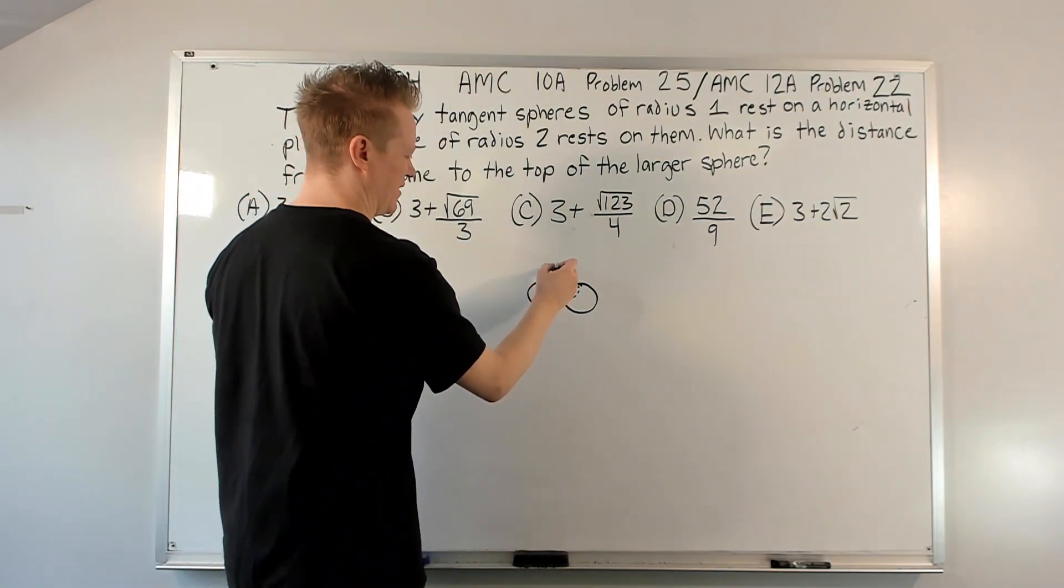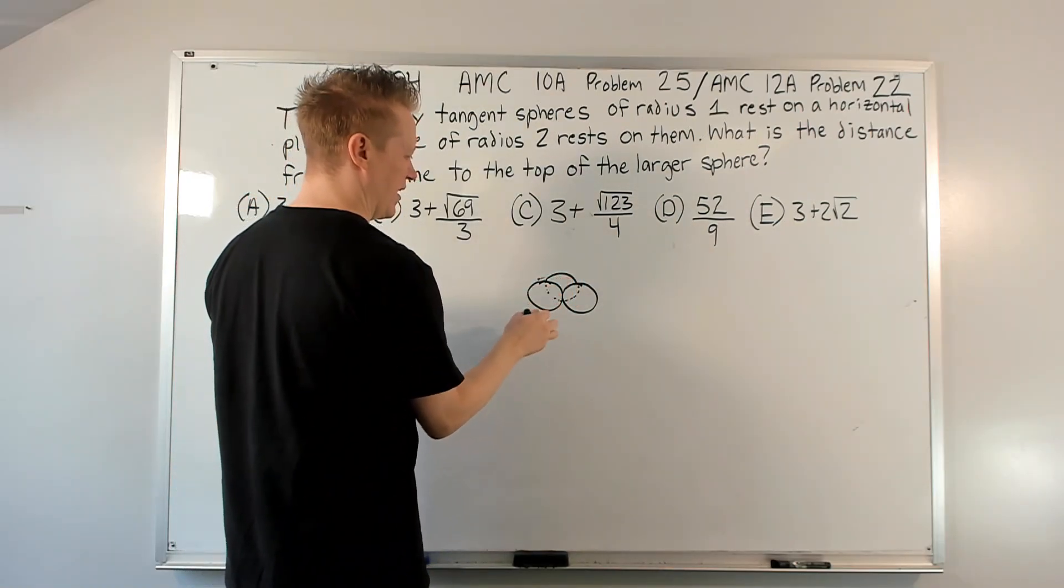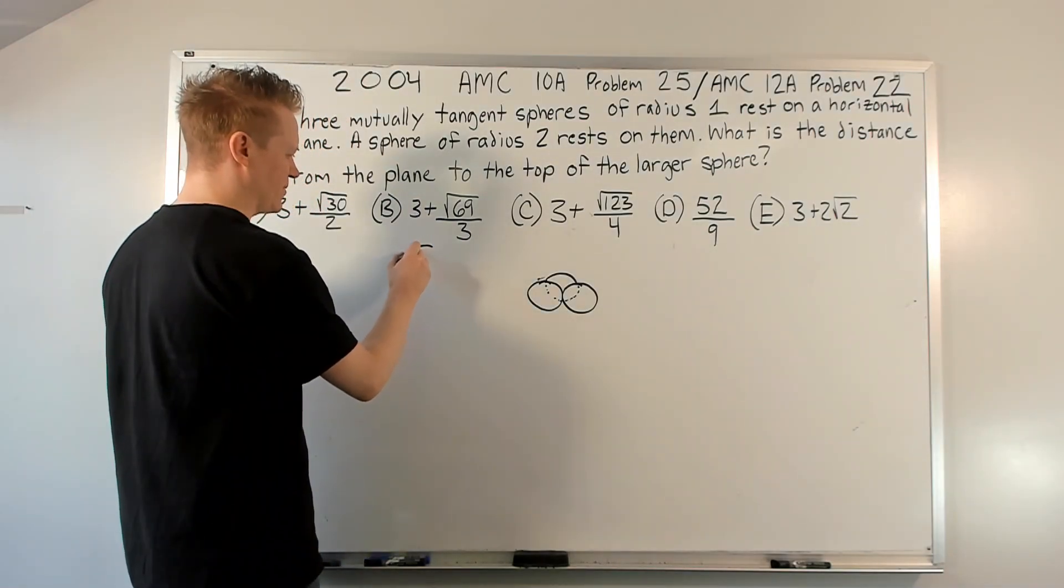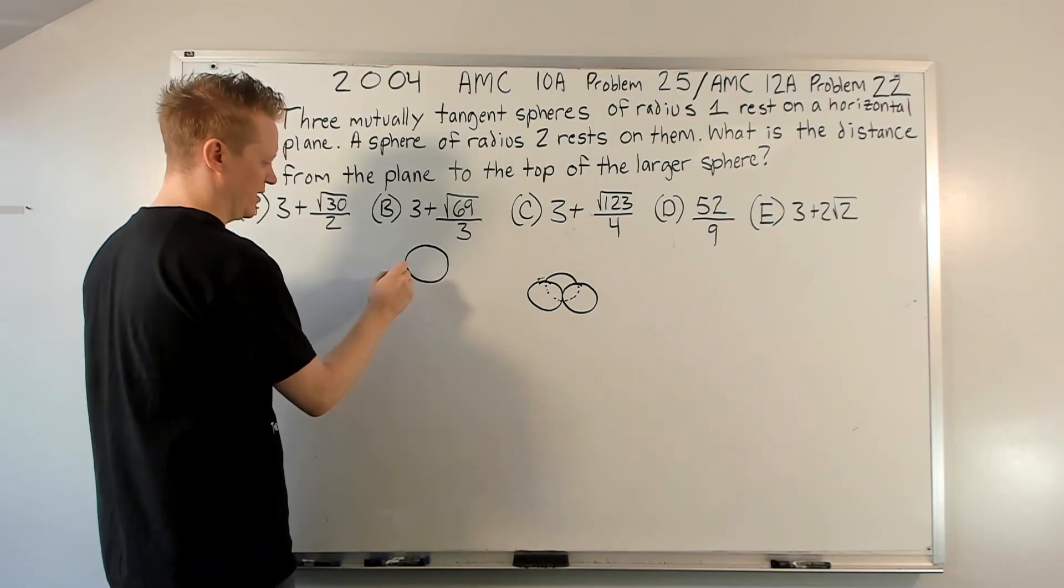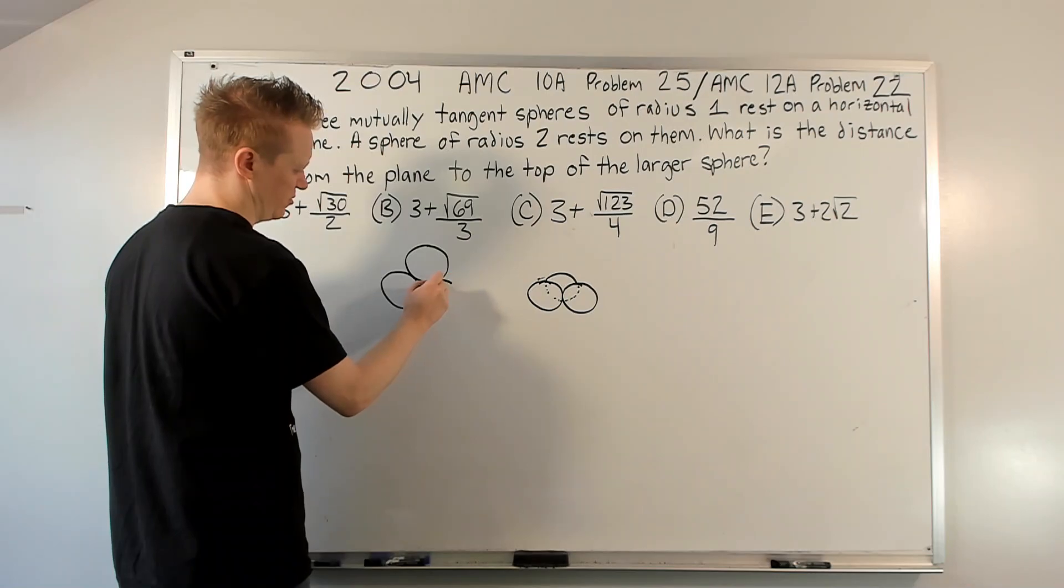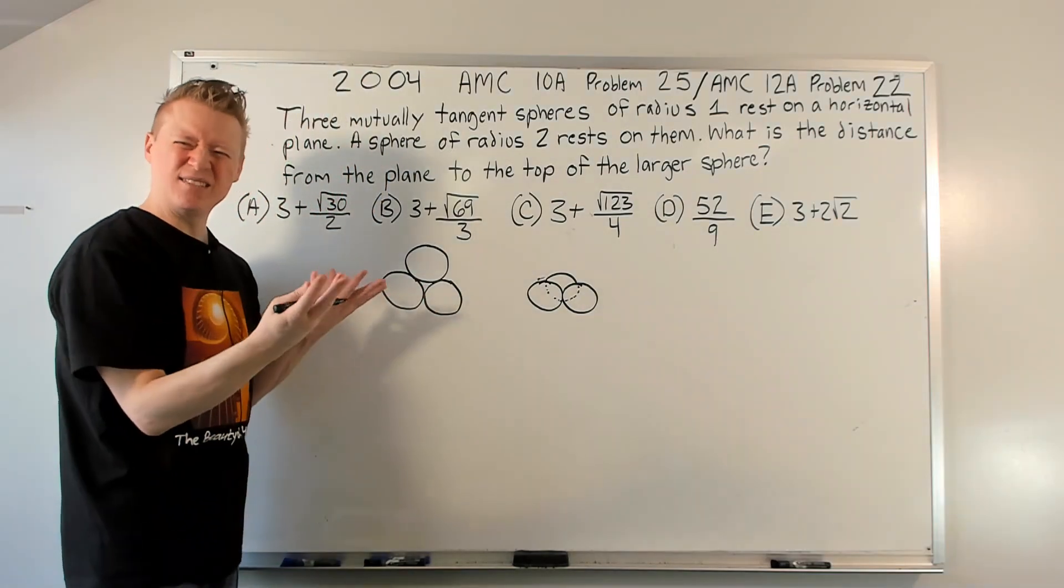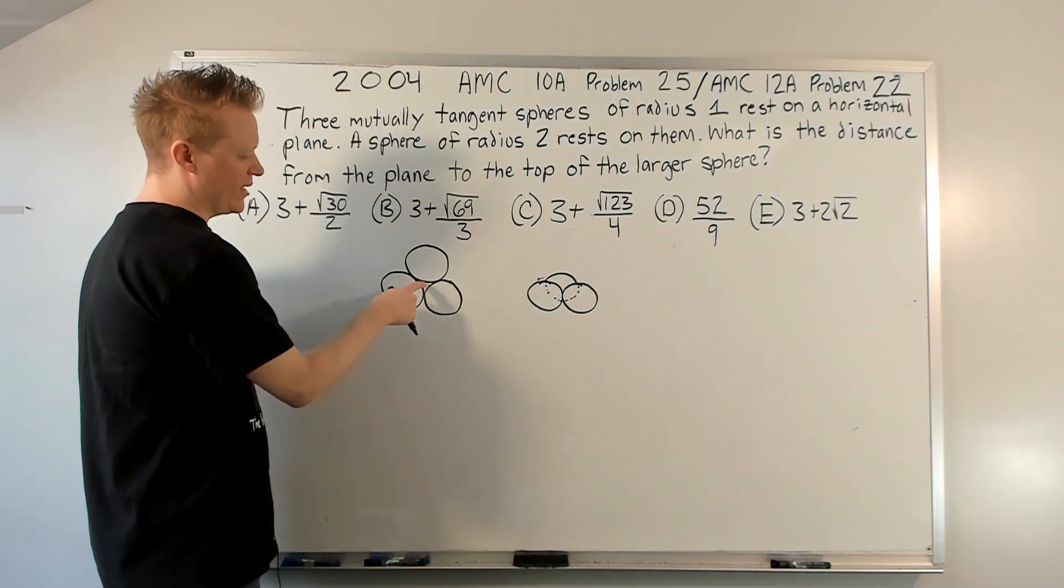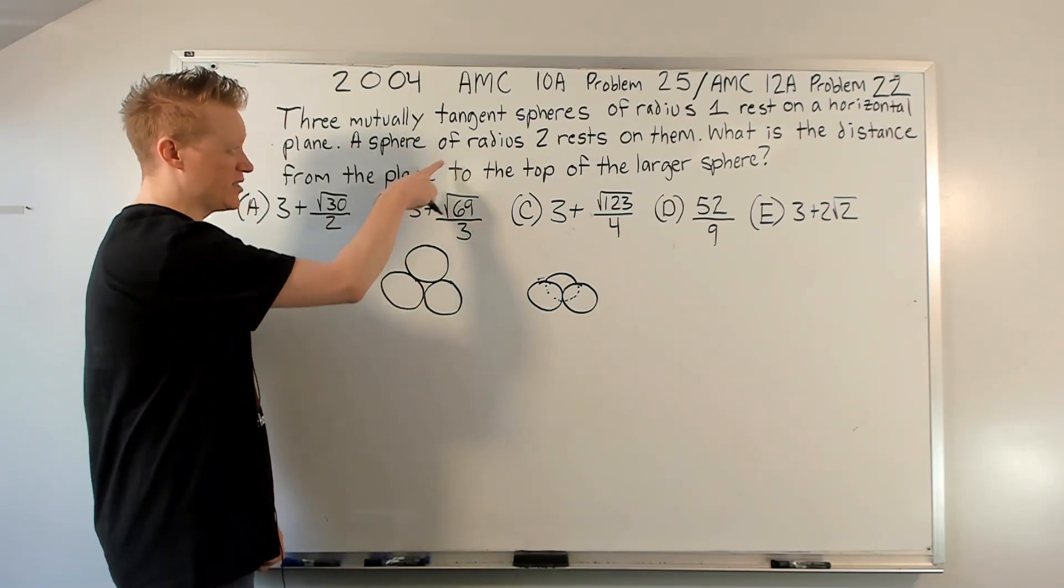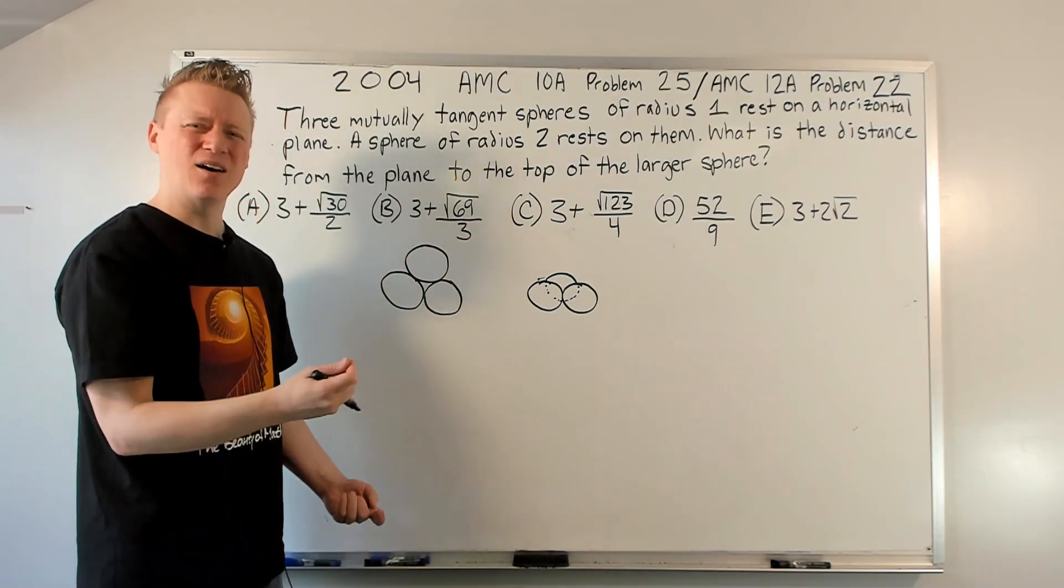So those are the three that rests on the plane. What if I now tried to draw, again, how are you going to put a sphere of radius two that rests on them? See, what's going to happen is, let's kind of look at a top-down view maybe. If I look at a top-down view, right, this is sphere one and sphere two and sphere three. They're not quite perfectly accurate. You can imagine, right? Right in the middle of these three spheres is where the lower end of that larger sphere, the radius two one, is going to rest. But how low is it? Oh man, it's kind of hard to see, right?